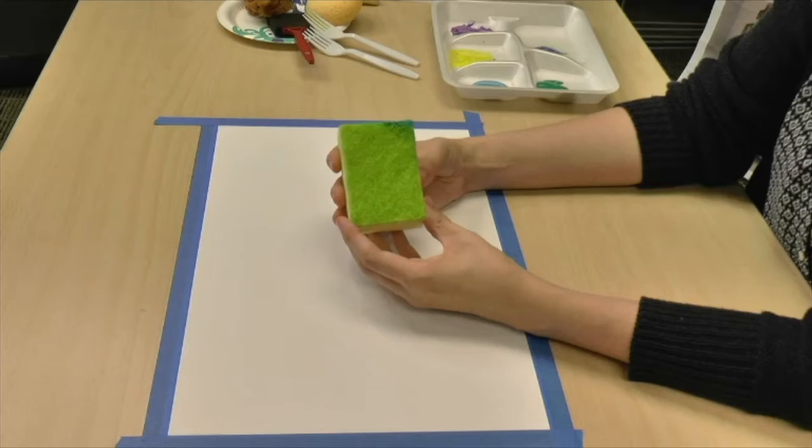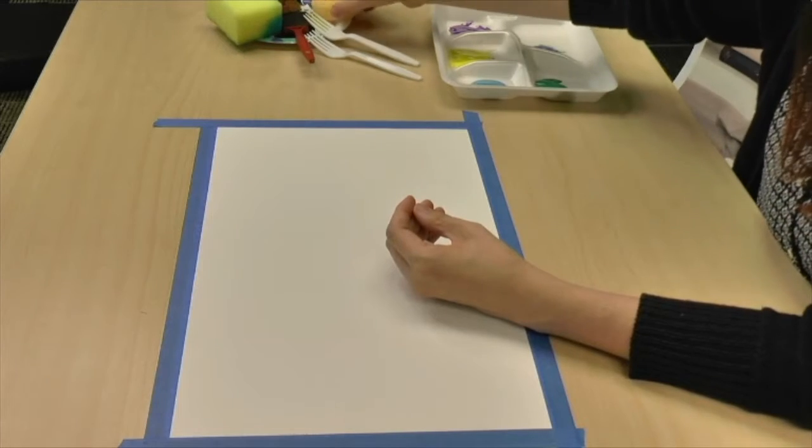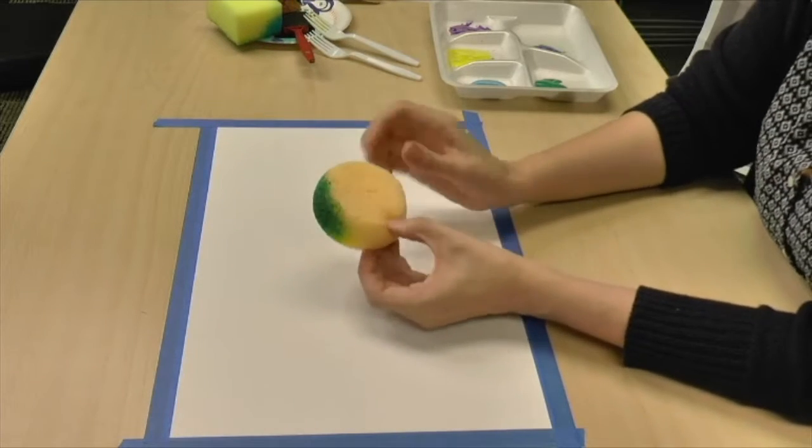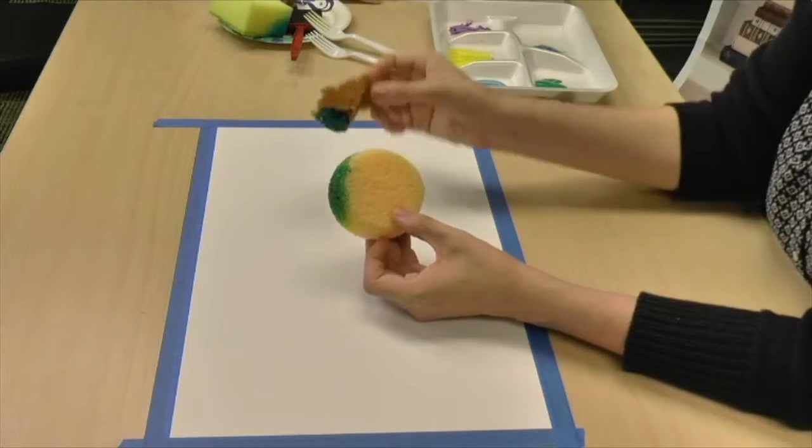So one thing that you can use is a regular dish sponge or dish rag. Maybe your parents have an old one that you could use. I also have a couple nicer sponges, more like ones that an artist would use.